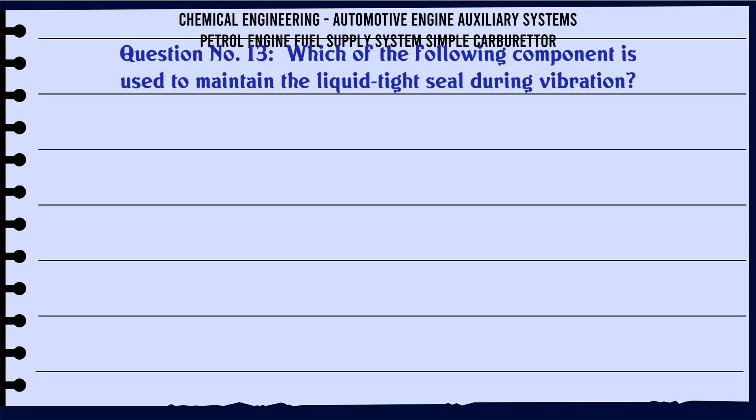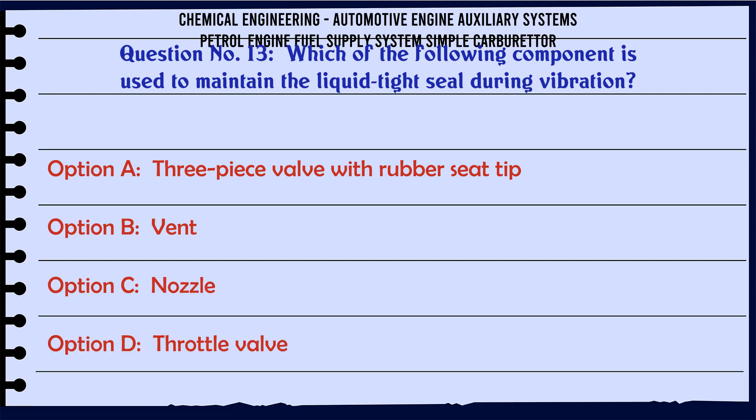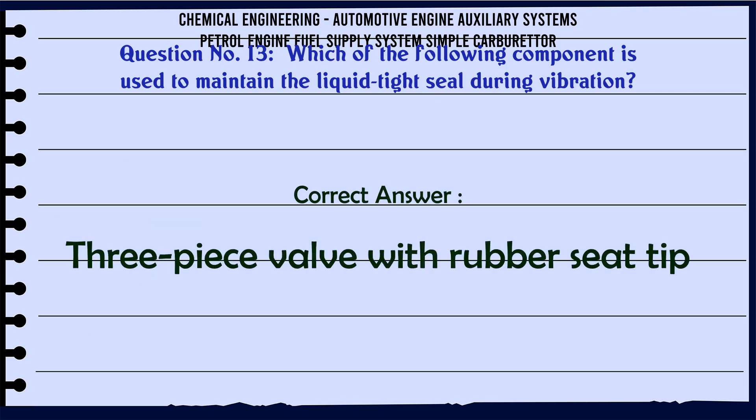Which of the following components is used to maintain the liquid tight seal during vibration? A. Three-piece valve with rubber seat tip. B. Vent. C. Nozzle. D. Throttle valve. The correct answer is three-piece valve with rubber seat tip.